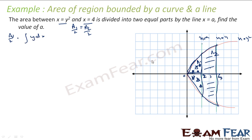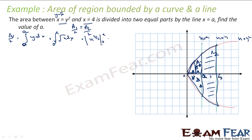A1/2 = ∫(0 to a) y dx, where from x = y² we get y = √x. So A1/2 = ∫(0 to a) √x dx = [x^(3/2) / (3/2)] from 0 to a = (2/3) · a^(3/2).